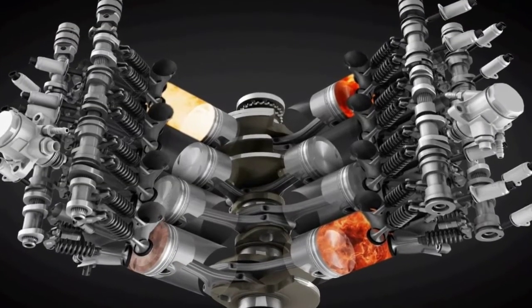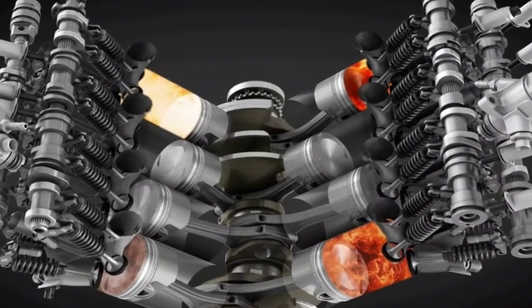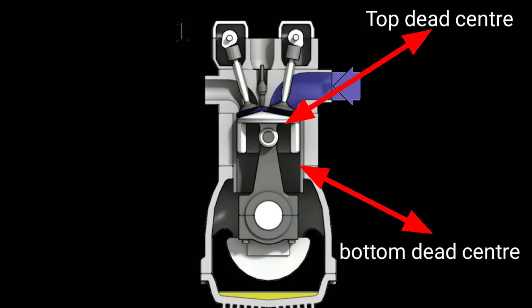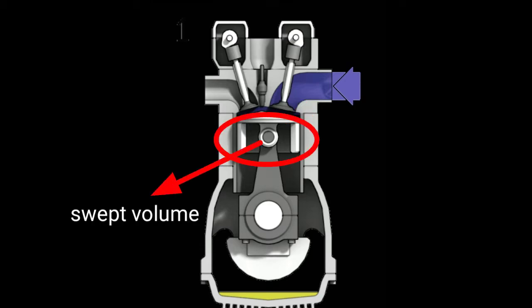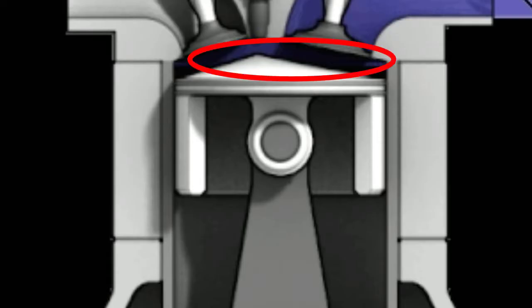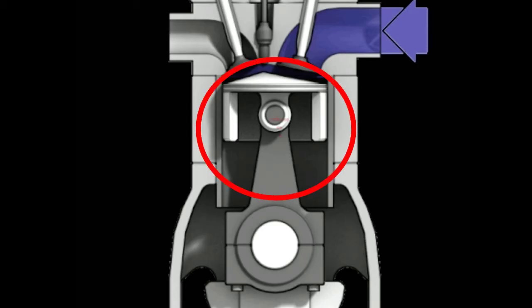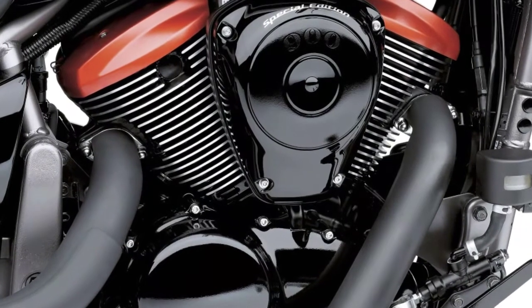In an engine, a piston is at the top dead center and bottom dead center. In the top dead center, the bottom dead center is swept volume. The combustion chamber is the clearance volume. This is the cylinder volume. In this volume, CC is calculated.